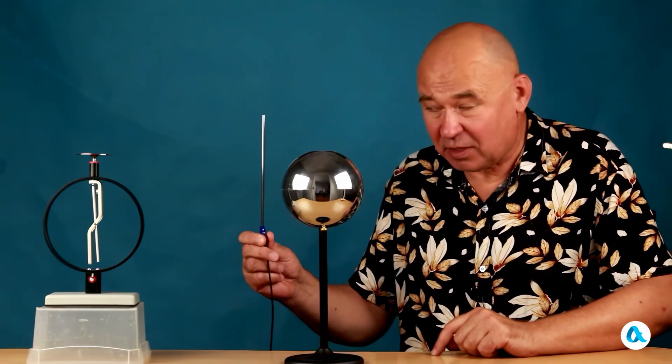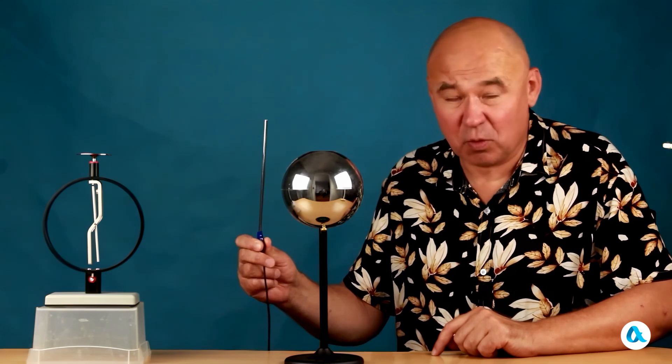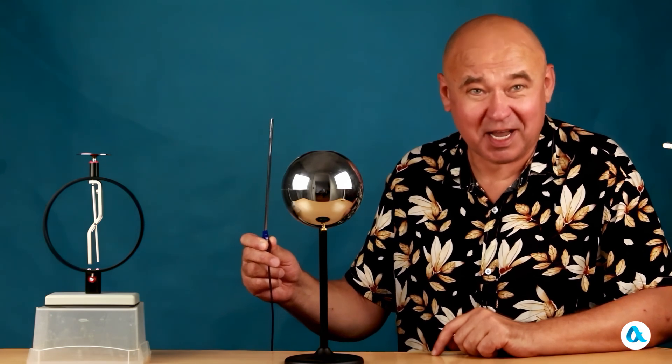And now there will be something new. This metal rod is connected via a wire to the central heating battery, and acts as a ground.